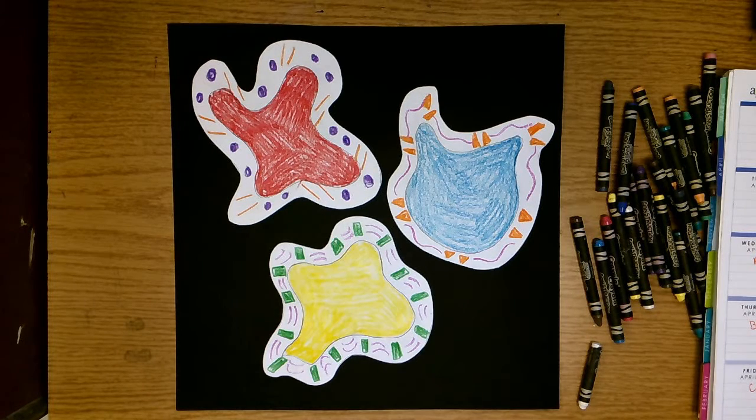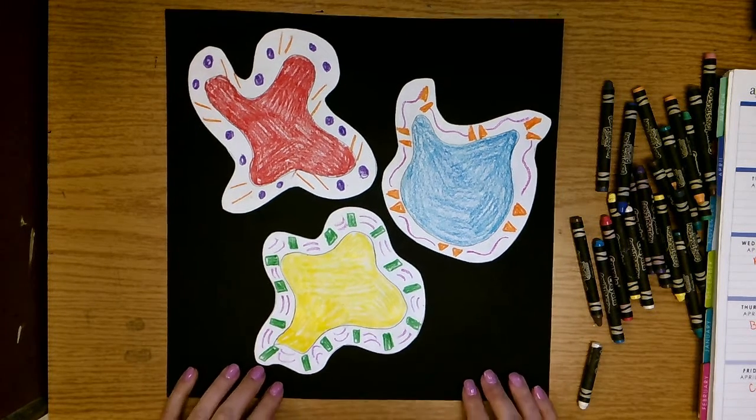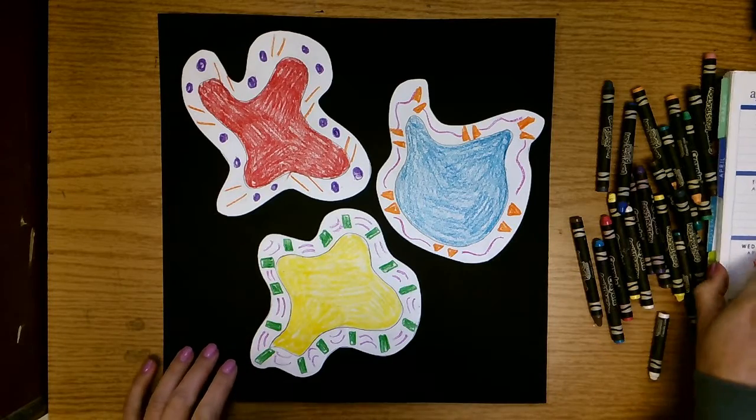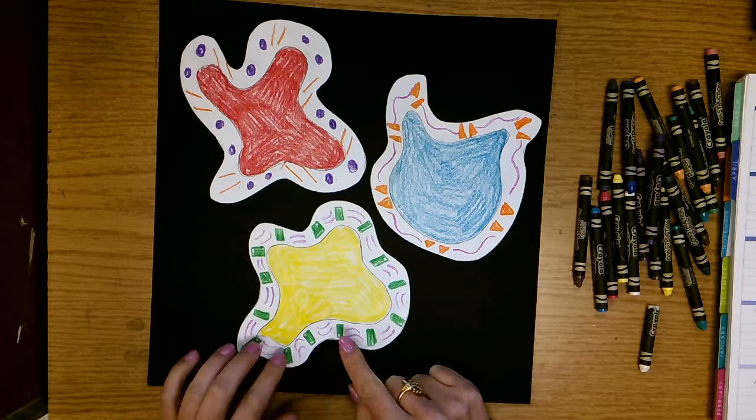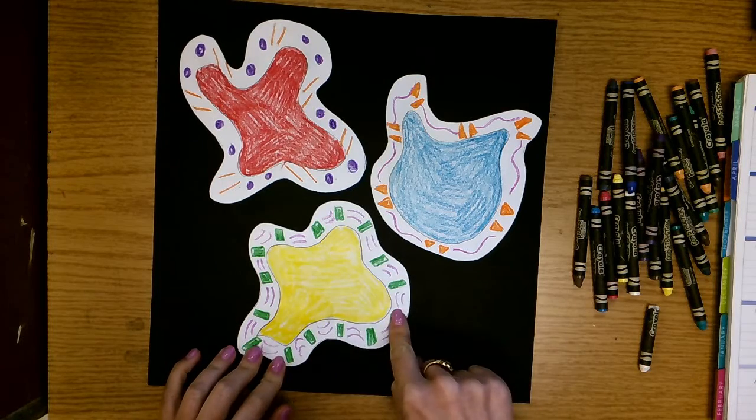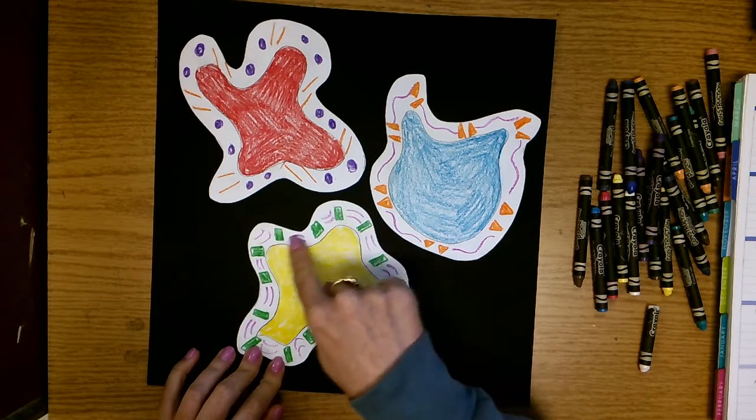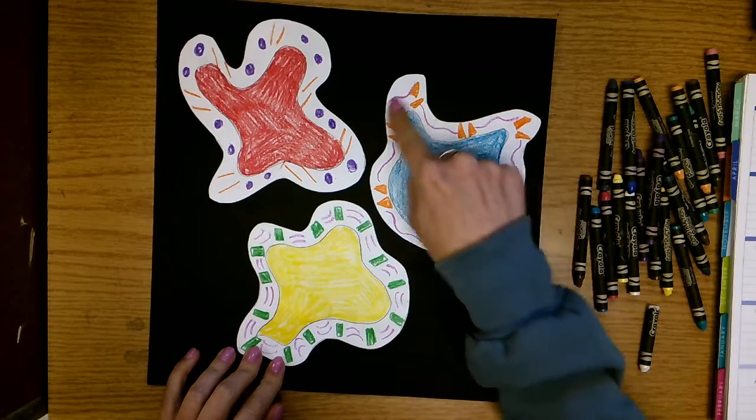All right, friends. So today we are going to be finishing up our Reggie Laurent inspired organic shape project. The last time we were together, we finished coloring in our organic shapes and adding these awesome patterns in the racetrack around the edges.